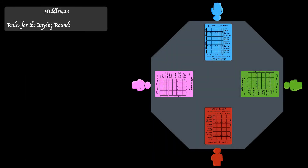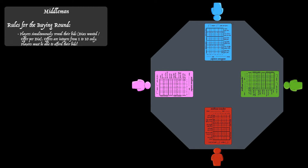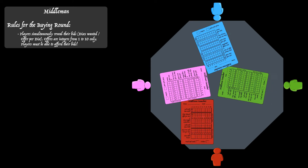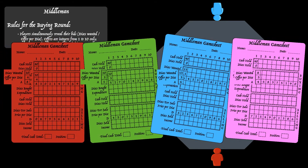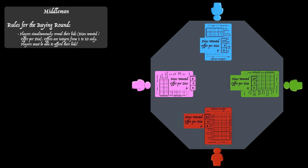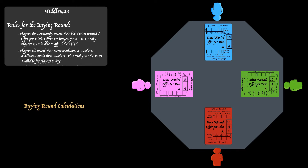Let's now examine the mechanics of a buying round. Players will have secretly written down their disks wanted and offers per disk, and these are now revealed. The middleman uses the A number to start himself off, to determine how many disks are available for the players to buy. Red's A number is 8, green player has 5, blue player has 6, and purple player has 4 — a total of 23 disks available for the players to buy from the middleman.